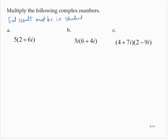Now, the standard form of a complex number is a plus bi.